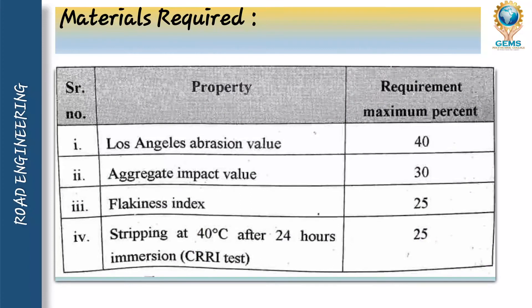The material requirements are: Los Angeles abrasion value maximum percentage should be 40%. Aggregate impact value should be 30. Flakiness index should be 25. And stripping at 40 degrees after 24 hours immersion in CRR test should be 25. These are the required values that should be met so the material can be used for a bituminous road.